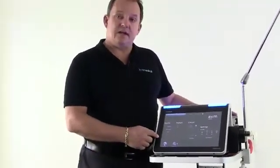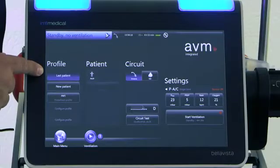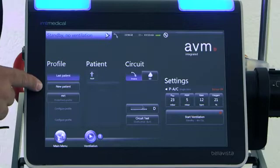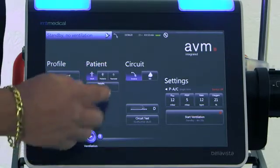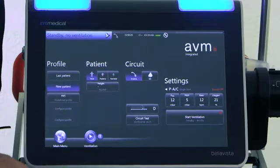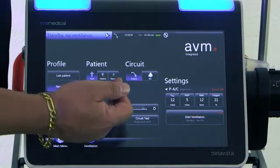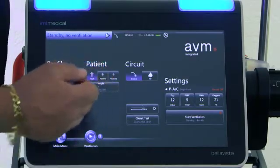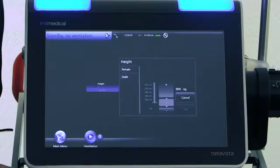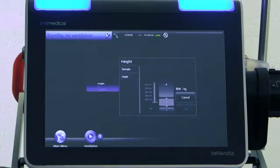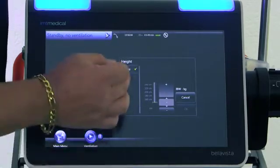On the right-hand side here, we have the profile selections, and the two standard profiles are last patient and new patient. If I choose a new patient profile, the Bella Vista activates the second patient profile setting, which then allows me to adjust the patient category: adult, pediatric, or neonate. When I've selected the adult patient, I can work down the profile, and I can see I have an option to input a patient height to determine an ideal body weight. So in this case, I can choose a female patient or a male, whichever gender.